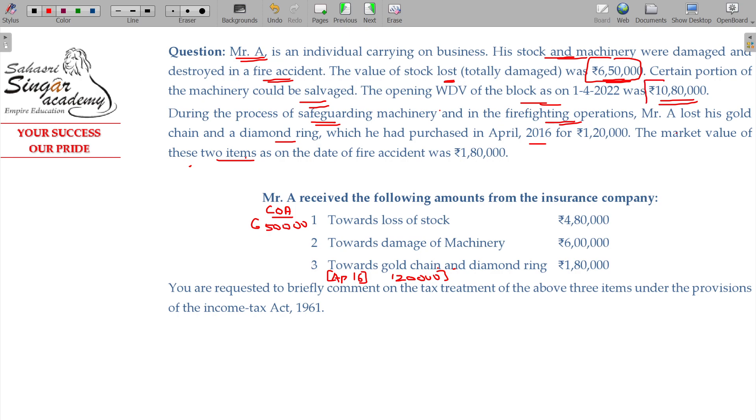WDV of the block of assets being 10 lakhs 80. Either cost of 1 lakh 20. Right.